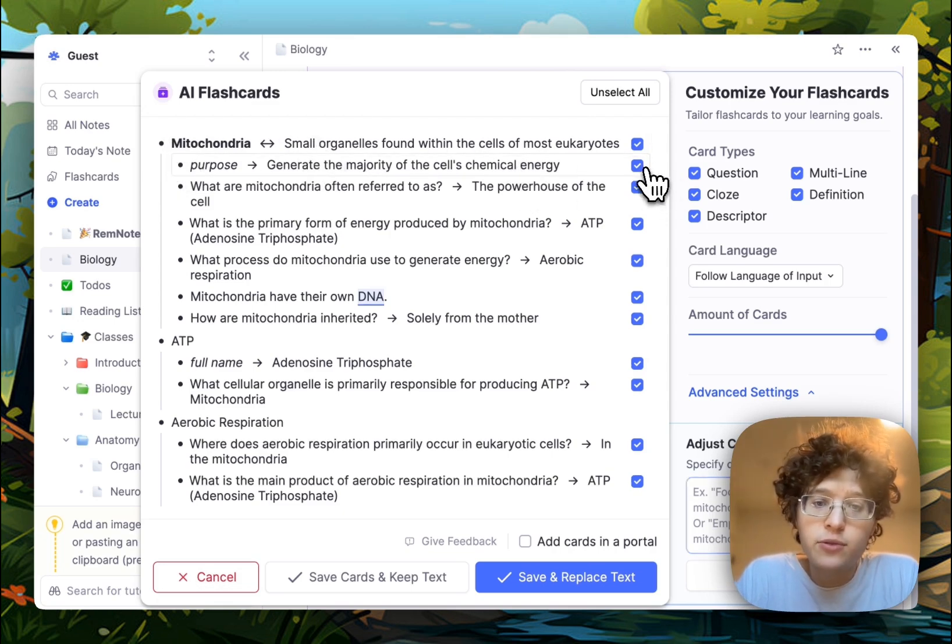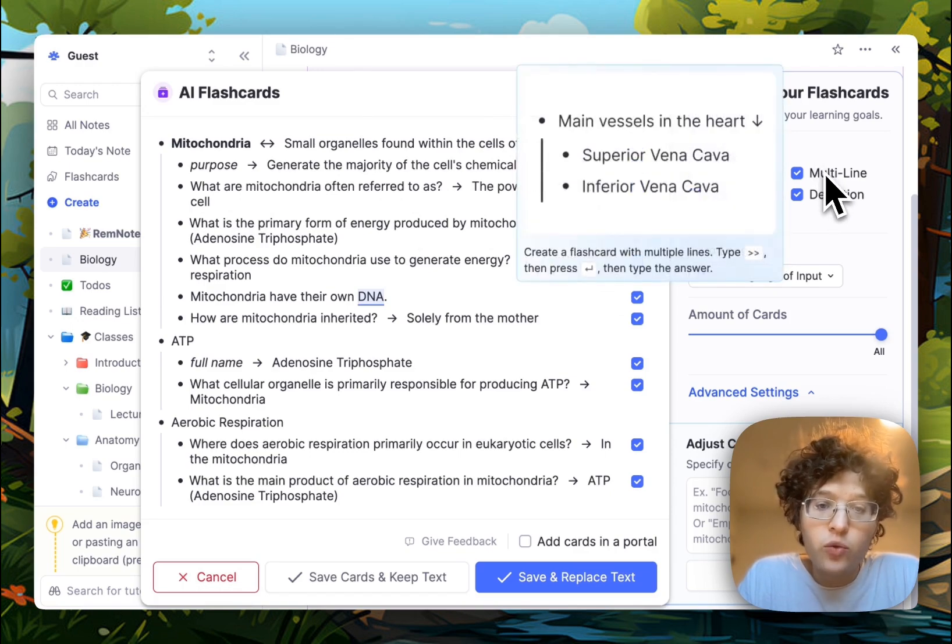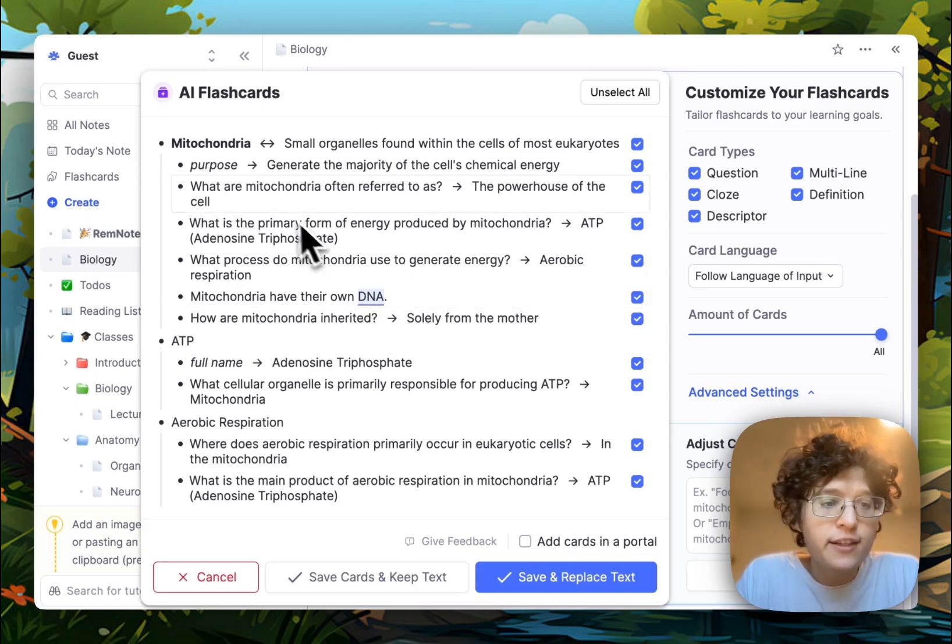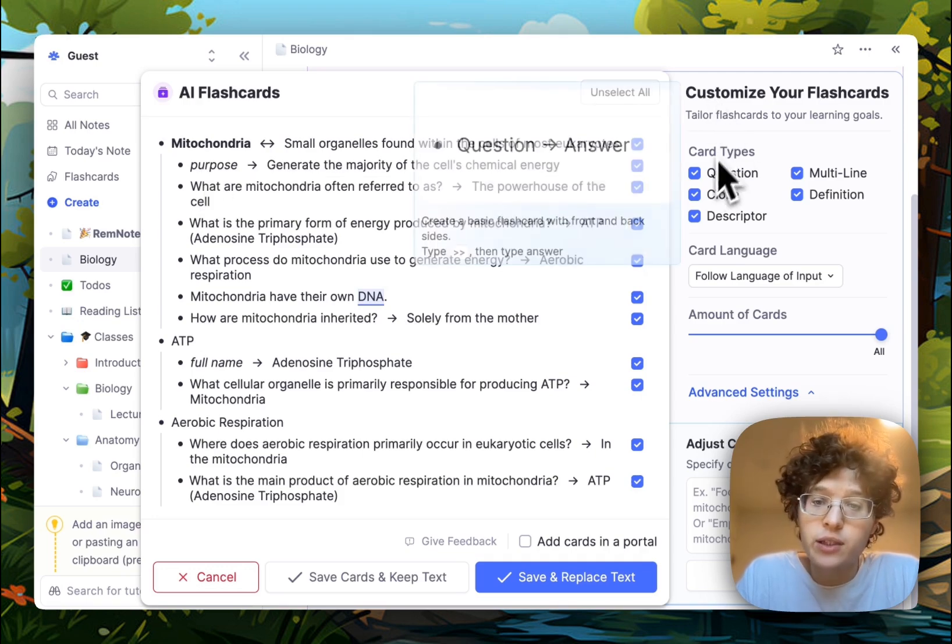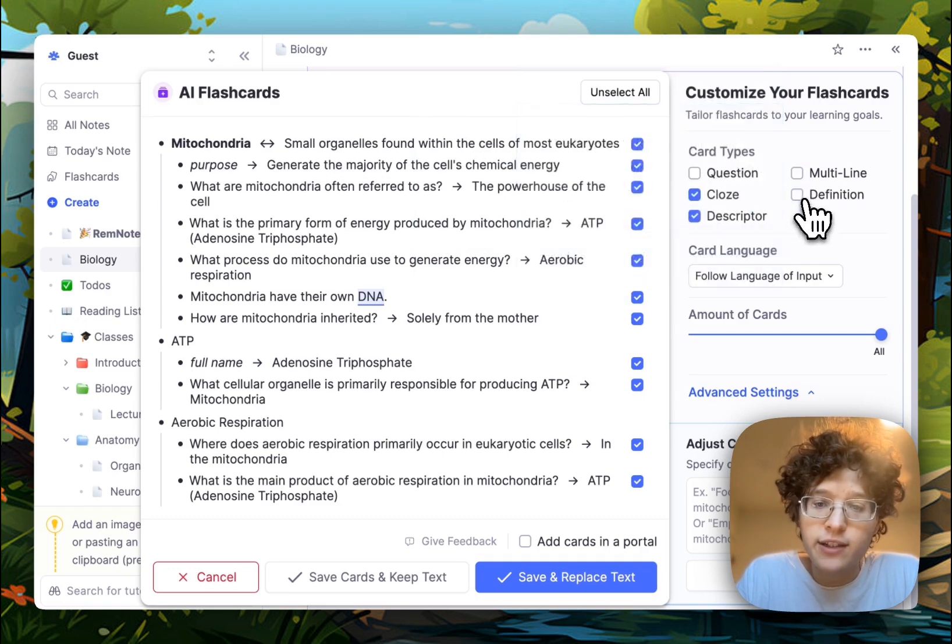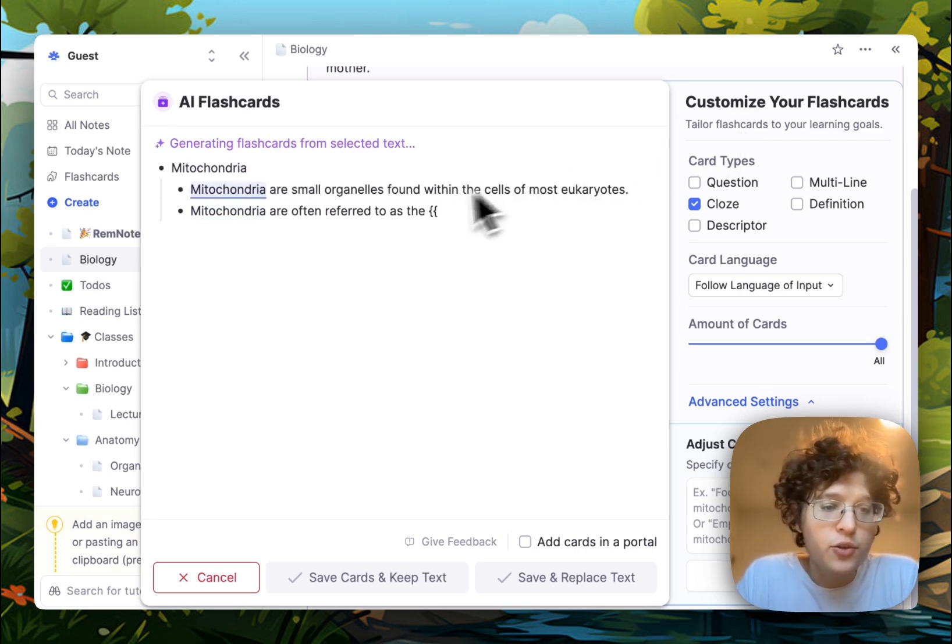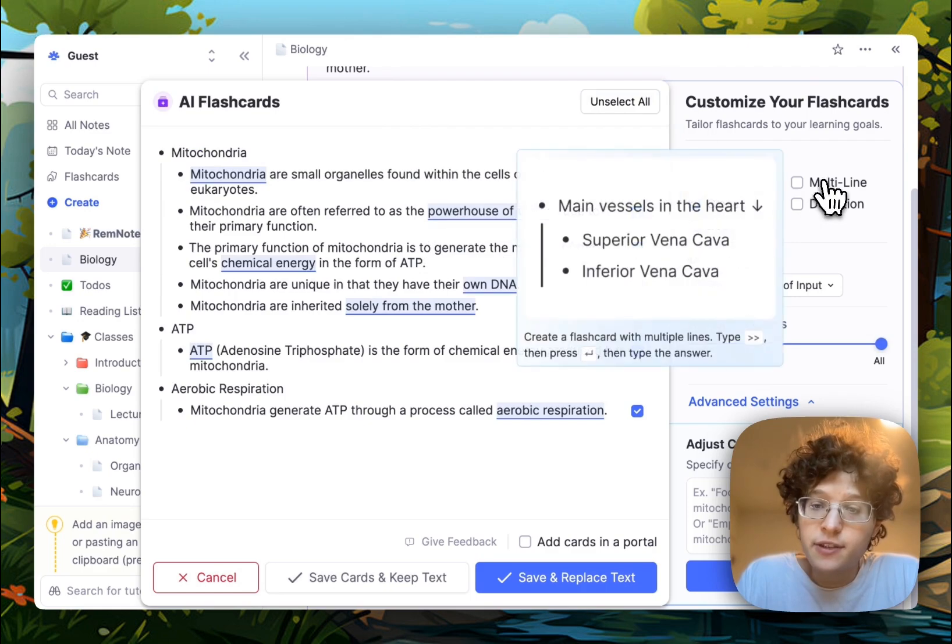Individual cards can be enabled or disabled by checking this box, and you can customize them in a variety of ways. First, you can choose what kind of cards you want, from questions, which are the single line ones like this, multi-line, which go onto multiple lines, closes, which are fill in the blanks like this one here, definitions, such as the definition of mitochondria, and descriptors, which are these terse, quick questions asking you, for example, what the purpose of the mitochondria is. If you only want the close fill in the blanks, you can just go and uncheck the others here, and you'll see that the system automatically starts generating new flashcards for you, letting you watch as they're written in real time.